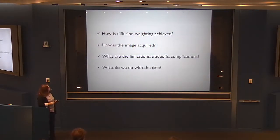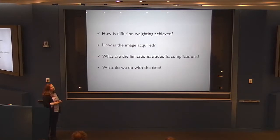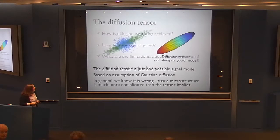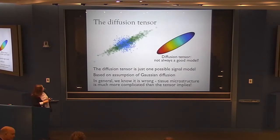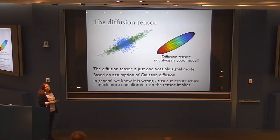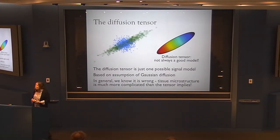In the final section, we'll revisit the question of the diffusion tensor — I've been talking about it a lot, and it's been mentioned several times already as perhaps not the best model for diffusion.